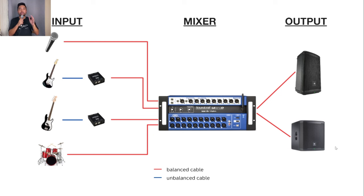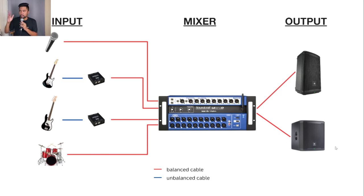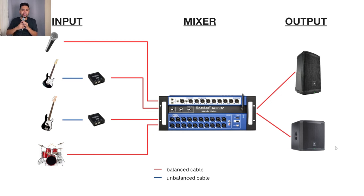This is the overview of our system and how it looks like — basically the workflow. For our input, we have our microphones, guitar, drums, keyboards, MP3, cell phone, and media computer. Everything goes into the mixer. From the mixer, it goes out to the speakers. That's really the very basic fundamental concept for our church sound equipment.